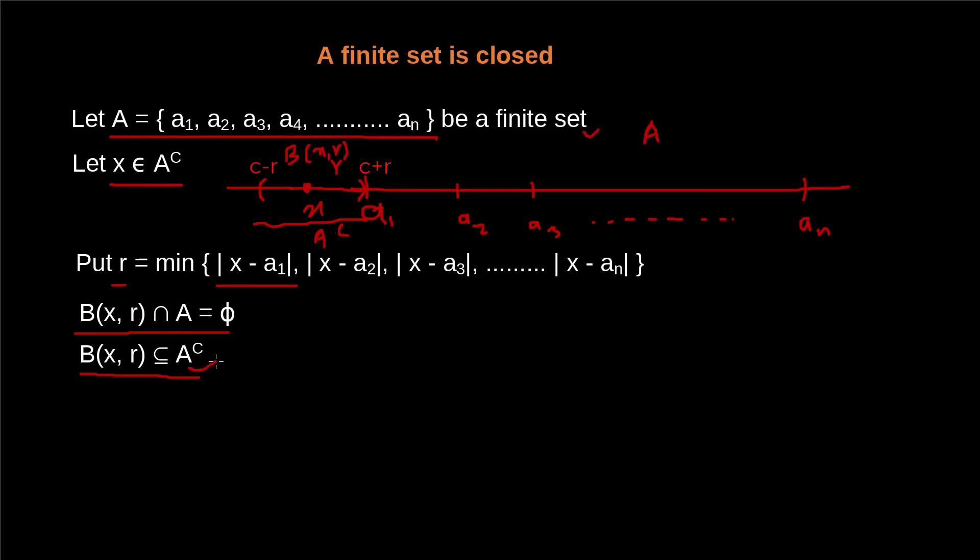So we have found that X, which is a point of A complement, is an interior point, since this open ball also lies inside of this. So it shows that this is an interior point. So we can say that A complement is an open set. So we have A complement is open, and this will prove that A is a closed set.